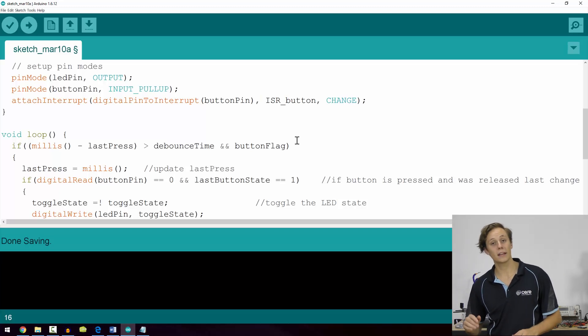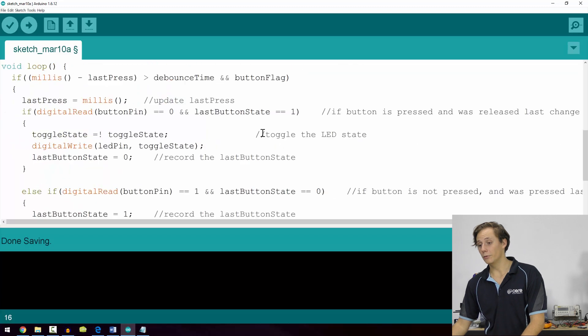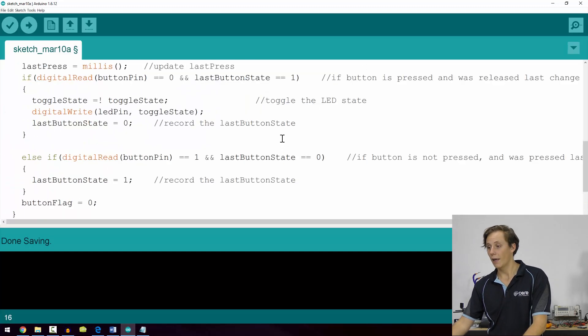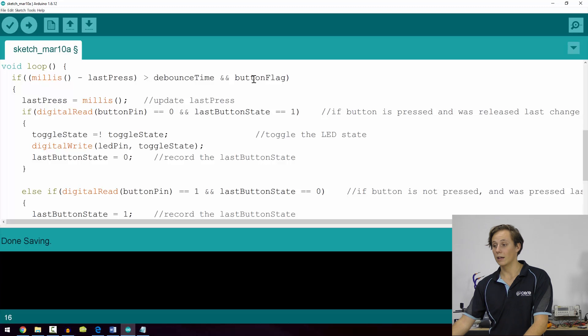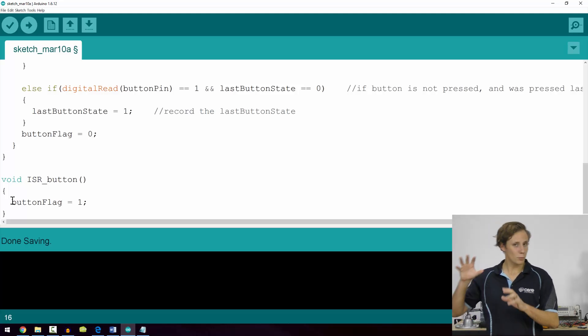Now we're also adding an extra condition for button flag, and the button flag has to be true or one in order for this to run at all. The reason for this is that it's going to bypass all of this because the if statement isn't met, and so the loop is just going to iterate doing nothing. The only way that button flag can be equal to one is if the ISR underscore button function, the interrupt service routine for pin 2, is run.